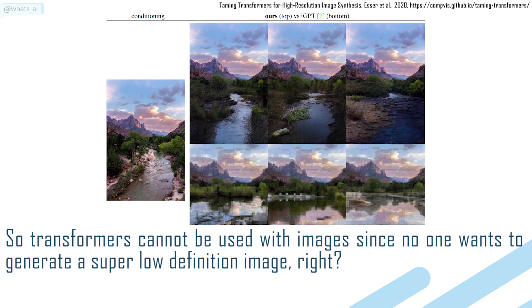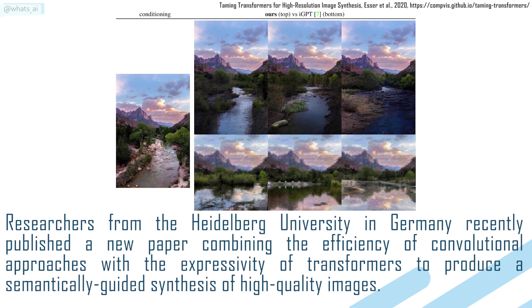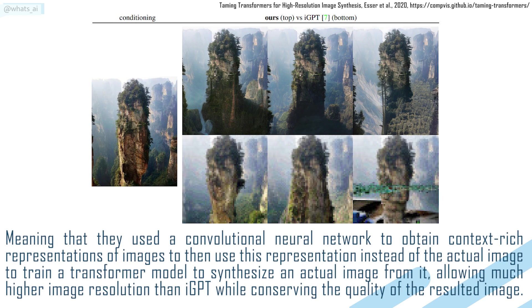Transformers cannot be easily used with images, since no one wants to generate a super low-definition image. Researchers from Heidelberg University in Germany recently published a new paper combining the efficiency of convolutional approaches with the expressivity of transformers to produce a semantically-guided synthesis of high-quality images. Meaning that they used a convolutional neural network to obtain context-rich representations of images, to then use this representation to train a transformer model to synthesize an actual image from it, allowing much higher resolution than IGPT while conserving the quality of the result image.